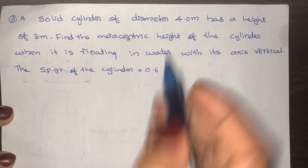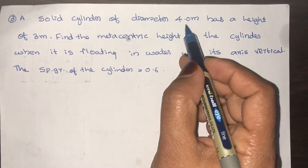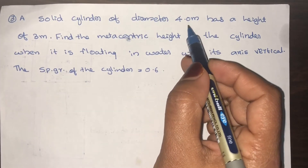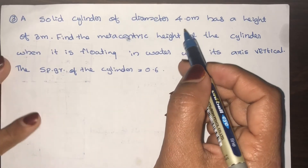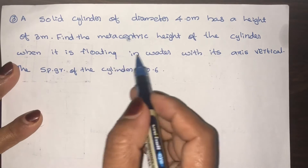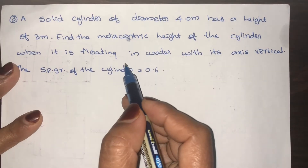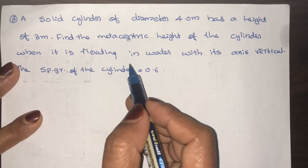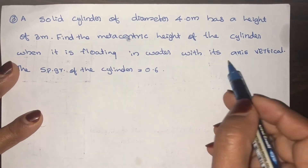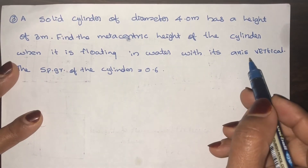A solid cylinder of diameter 4 meter has a height of 3 meter. Find the metacentric height of the cylinder when it is floating in water with its axis vertical.